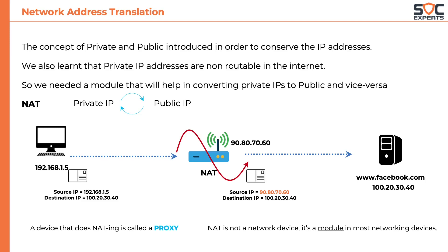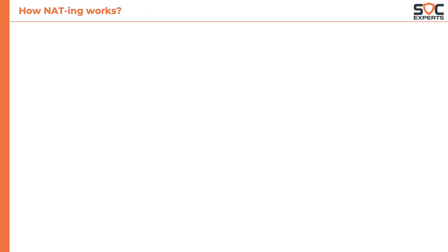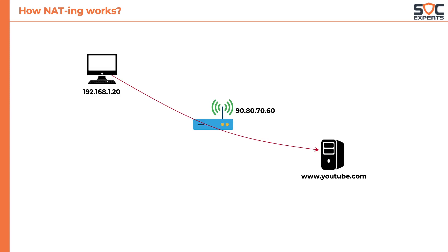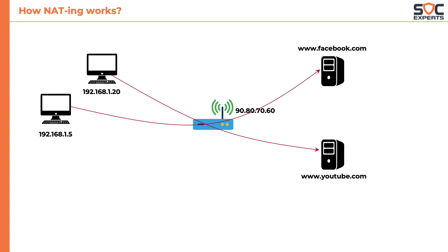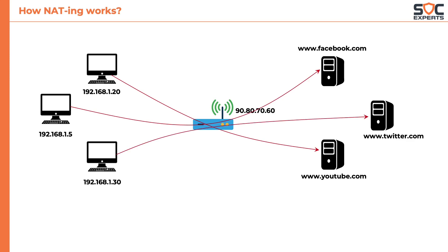This is good if there is one computer, but how does NATing work if there are multiple computers in a network? Consider this example where 192.168.1.20 is accessing youtube.com, 192.168.1.5 is accessing facebook.com, and 192.168.1.30 is accessing Twitter. So how does this router NAT multiple IPs and deliver the appropriate content to each computer?